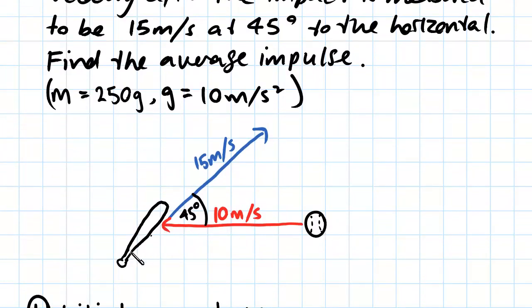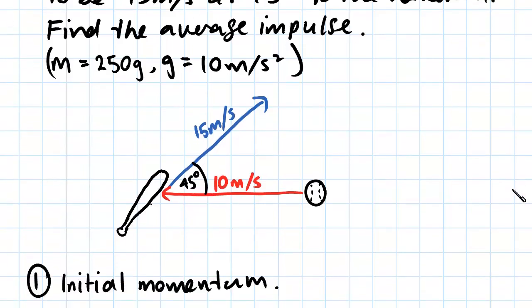And it's being hit away by this baseball bat at a final velocity of 15 meters per second, but this time it has an angle of 45 degrees. So our first step in this question is going to be working out the initial momentum of the ball.